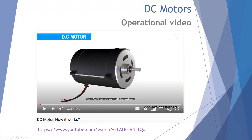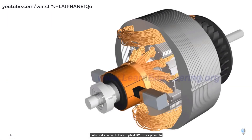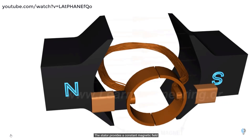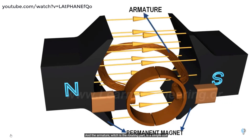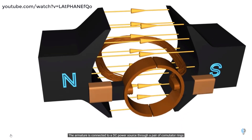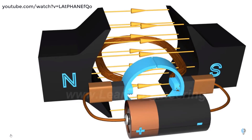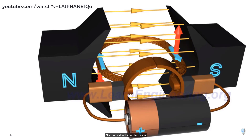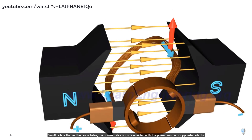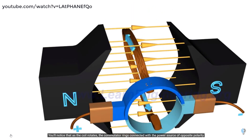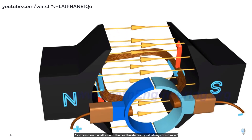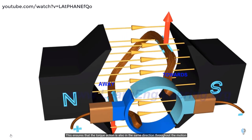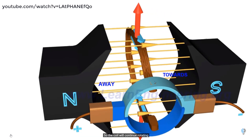Let's look at a video on the construction of a typical DC motor. Starting with the simplest DC motor: the stator provides a constant magnetic field and the armature (the rotating part) is a simple coil connected to a DC power source through a pair of commutator rings. When current flows through the coil, an electromagnetic force is induced according to the Lorentz law, so the coil starts to rotate. As it rotates, the commutator rings connect with the power source of opposite polarity, ensuring that on the left side electricity always flows away and on the right always flows towards, so the torque is always in the same direction.